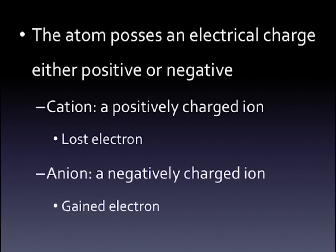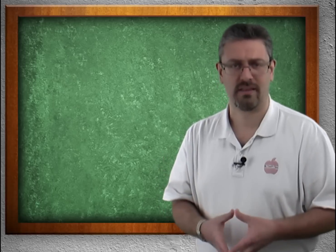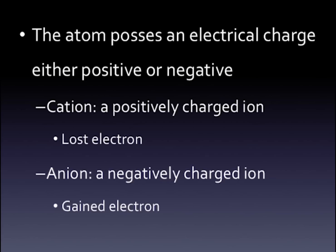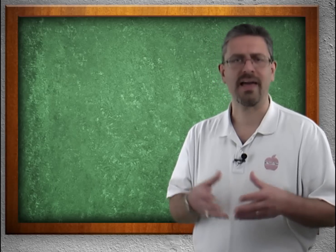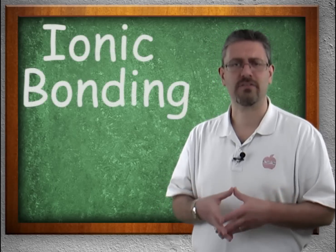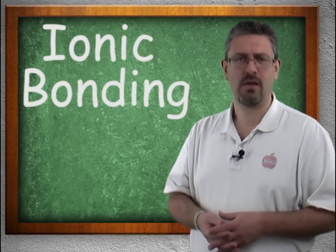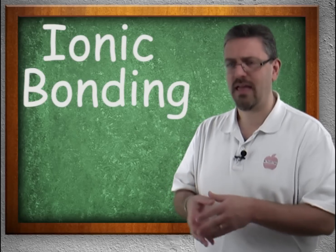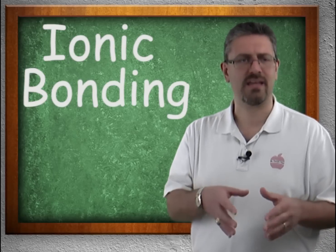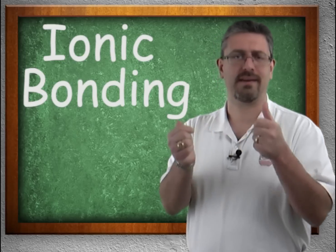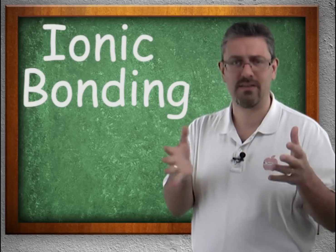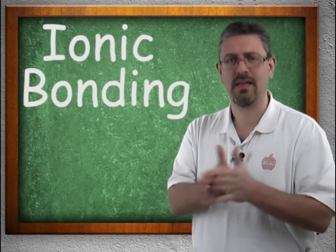A cation is a positively charged ion, meaning it has lost an electron, while an anion is a negatively charged ion because it has gained an electron. Ionic bonding is simply opposites attracting — where you have a slightly positive and a slightly negative ion, and they come together and bond.